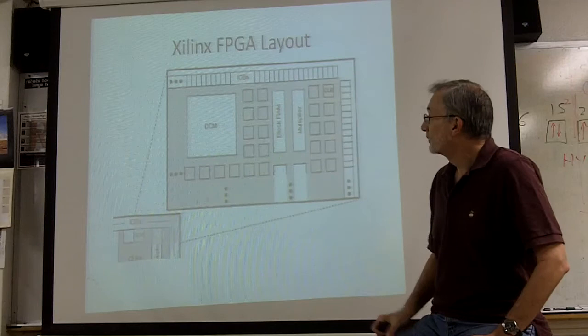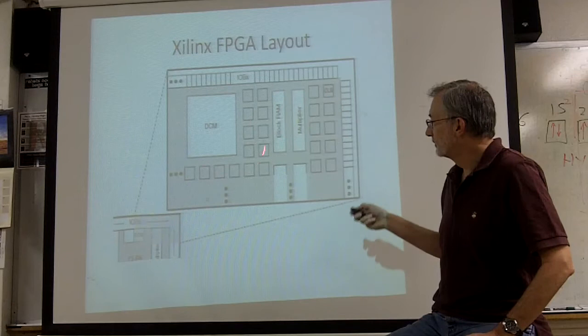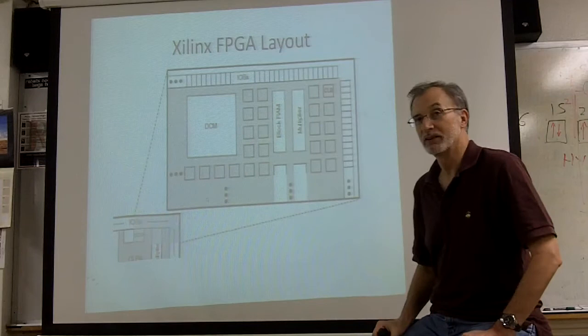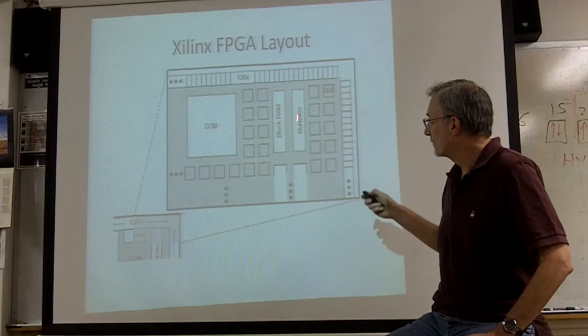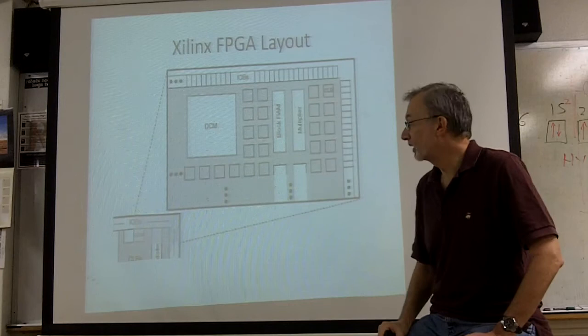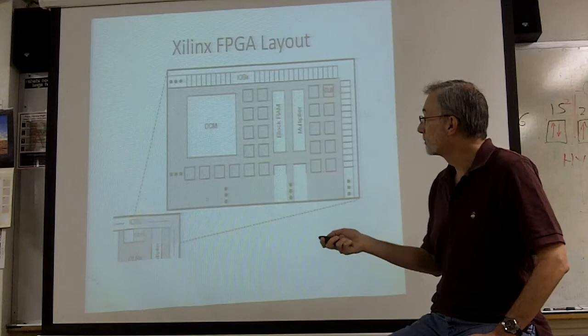This is a blow-up of one corner of the FPGA. Here's the digital clock manager. Here's all the individual configurable logic blocks. And as you can see, they stick them any place they have a few square microns of space. And then the strip that has the block RAM and the multiplier in it, you can see there's a block RAM dedicated to a specific multiplier right next to it. And the I/O blocks across the top and the bottom.